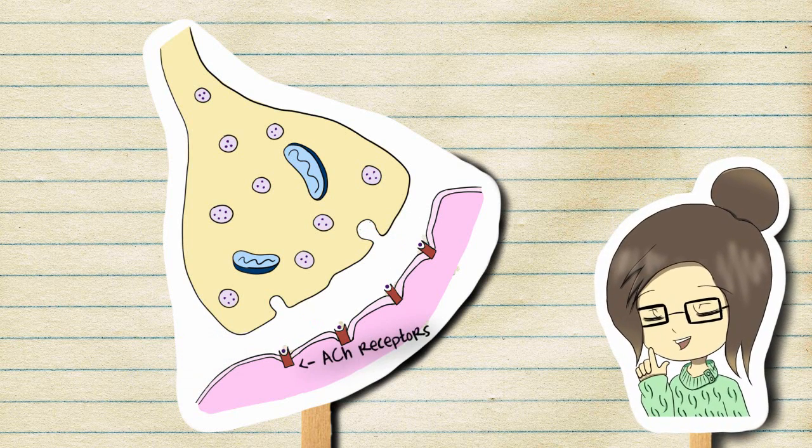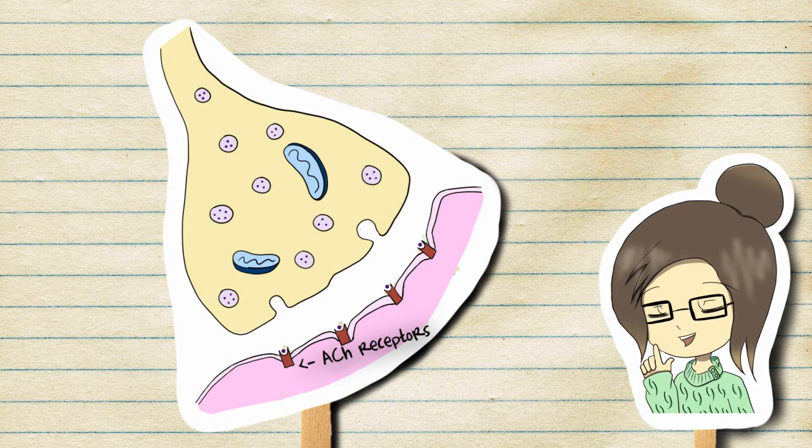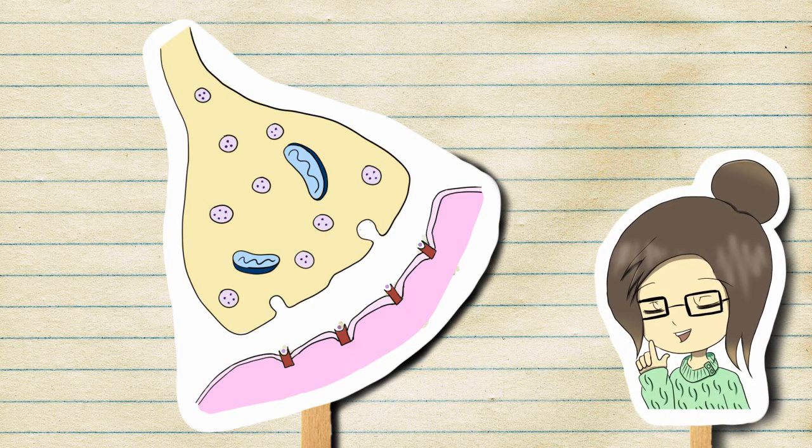ACH binds with ACH protein receptors on the sarcolemma, stimulating a muscle impulse.